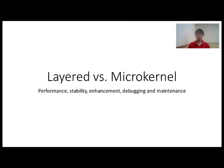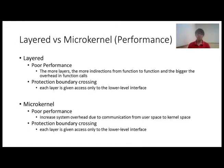Hi, my name is Wong Zen Wei and I will be talking about the difference between the layer approach and micro kernel. For the layer approach, it has poor performance because it depends on the number of layers — the more layers, the more indirection from function to function and the bigger the overhead in function calls. The layer approach also performs poorly because of protection boundary crossing, meaning each layer is given access only to the lower level interface. For micro kernel, it also has poor performance due to increased system overhead from communication between user space and kernel space. Micro kernel also has a protection boundary crossing which affects performance.